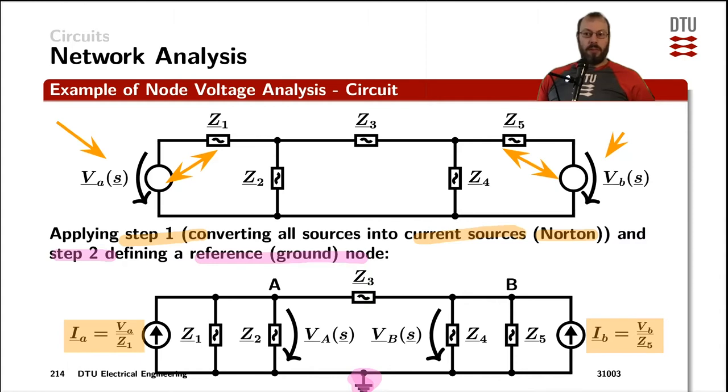Now the third step is using Kirchhoff's current law on all the remaining nodes. And the remaining nodes in this case is the node A here and the node B, which I have named this way now, and I have also defined the voltages from the node A with respect to ground and from the node B with respect to ground. The currents flowing into node A are the source currents connected to it, which is only the current source IA, and for the same for the B node, we only have the current from the current source IB flowing into the node.